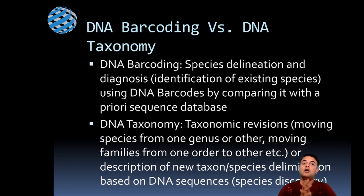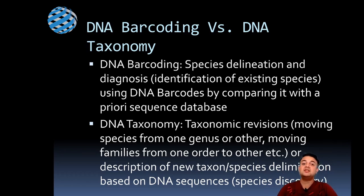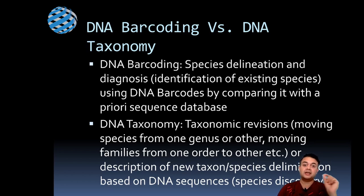DNA taxonomy means taxonomic revisions — for example, moving species from one genus to another, or moving families from one order to another. It also includes describing new taxonomy such as new species or a new genus, and species delimitation based on DNA sequence data. Species delimitation means assigning a pool of DNA sequences to species A, species B, and so on — that is what is known as species discovery, describing a species altogether new to science.